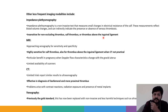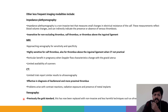Other less frequent imaging modalities include impedance plethysmography, MRI, CT, and venography. Impedance plethysmography is insensitive for non-occluding thrombus, calf thrombus, or thrombus above the inguinal ligament, though it is non-invasive. MRI has high sensitivity for calf thrombus and thrombus above the inguinal ligament. CT is effective in diagnosing iliofemoral and more proximal thrombus but has issues with contrast reactions, radiation exposure, and metal implants. Venography was previously the gold standard but has been replaced by non-invasive techniques such as ultrasound.